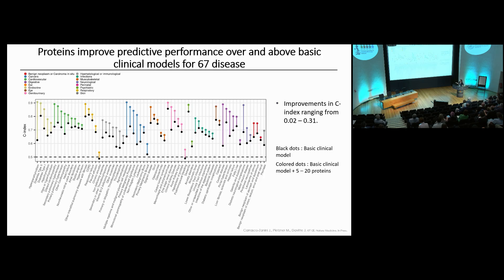When we add the top 5 to 20 informative proteins onto the clinical benchmark, we improved prediction for 67 diverse diseases across a range of clinical specialties. The black dots represent the clinical benchmark model and the colored dots represent the performance when we add our proteins. Some improvements range from around 2% to striking improvements of over 30% in the concordance index.